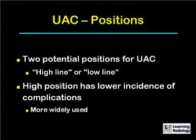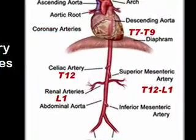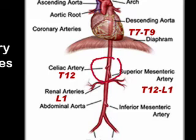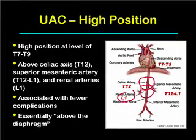There are two potential positions for umbilical arterial catheters. One is the high position, sometimes called the high line; the second is the low position, sometimes called the low line. The high position has a lower incidence of complications and is more widely used. The high position has the tip of the umbilical artery catheter at the level of T7 to T9, which is above the celiac axis at T12, above the superior mesenteric artery at T12 to L1, and above the renal arteries at L1. It is associated with fewer complications.